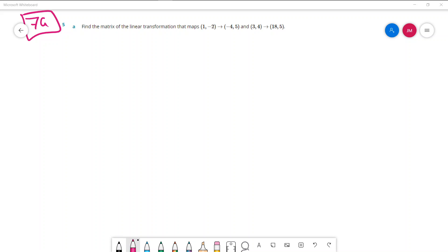Exercise 7G question 5 is asking you to find the matrix that moves the point 1, negative 2 to the point negative 4, 5 and the same matrix will move the point 3, 4 to 18, 5.